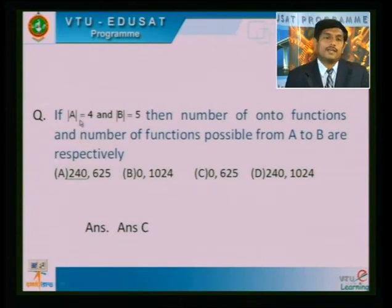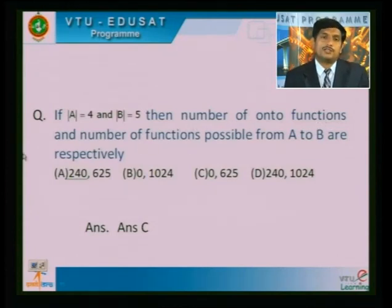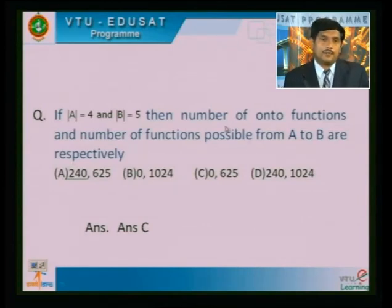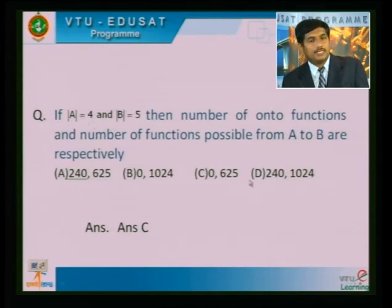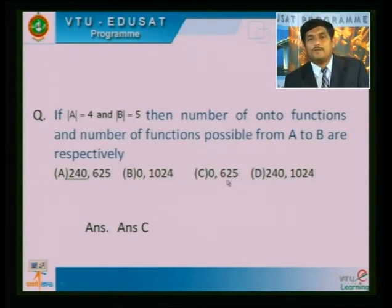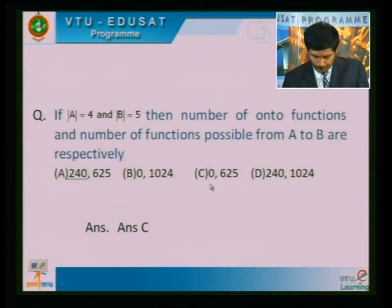If the order of A is 4 and the order of B is 5, then the number of onto functions and the total number of functions from A to B are respectively. The total number of functions is |B|^|A| = 5⁴ = 625. The number of onto functions requires |B| ≤ |A|, but here |A| = 4 < 5 = |B|, so the number of onto functions is 0. Therefore the third option is the solution.